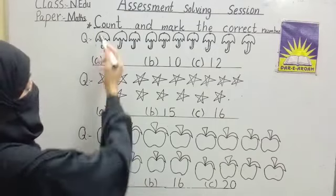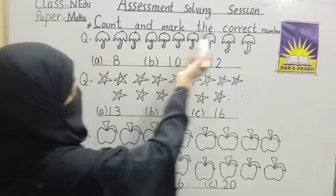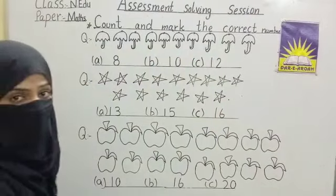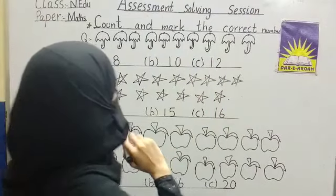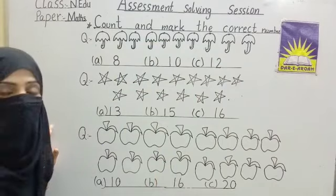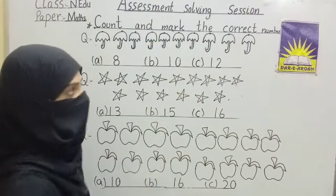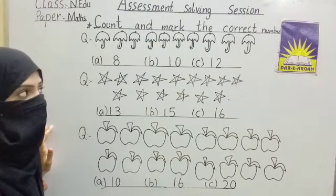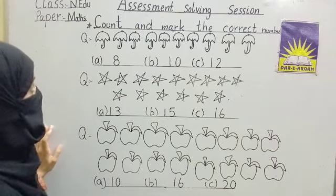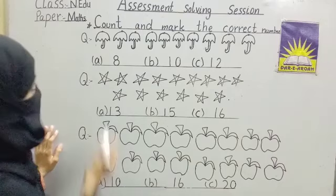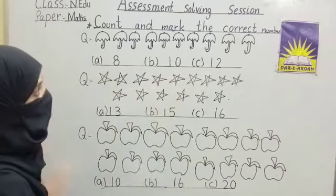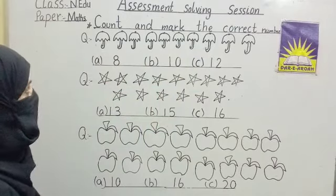Question: count and mark the correct number. You have been given pictures and you have to count them, then put a tick on the right number. Question number one: how many umbrellas are there? Count with me.